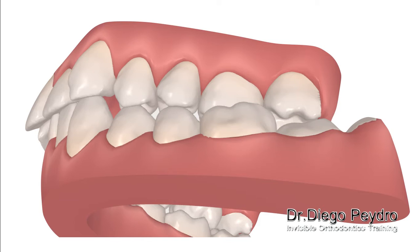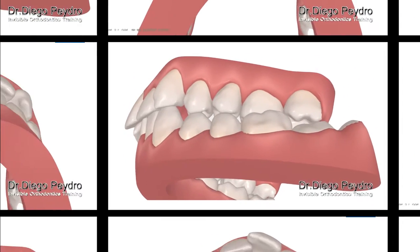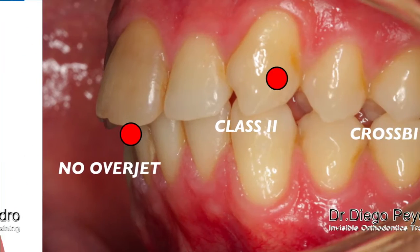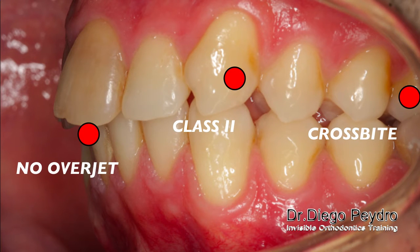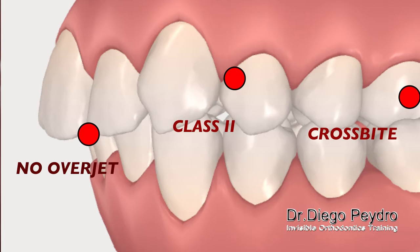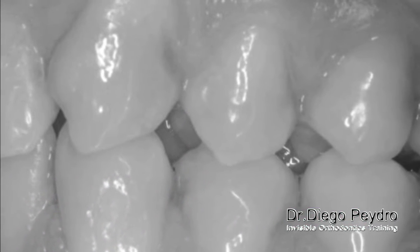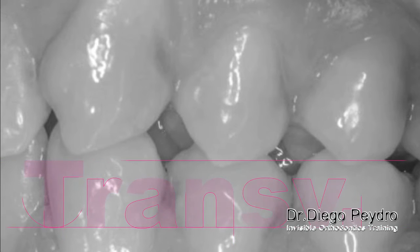Look at the crossbite that we have here. Another important thing is that we don't have overjet yet to solve the severe Class 2. We analyze the problems: crossbite, Class 2, no overjet. This is the problem that we have and this is what we have to solve. We have to analyze the overjet in order to plan a good treatment plan to address it.